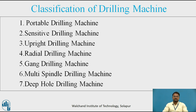Coming to the multi-spindle drilling machine. It is similar to the gang drilling machine in construction. It is used to drill a number of holes in the same job simultaneously and to reproduce the same pattern in a number of similar jobs in mass production. Coming to the deep hole drilling machine: in this machine, the part to be drilled is rotated and the drill bit is kept stationary. This helps in feeding the drill in a straight path without any vibration and for enlarging the holes.